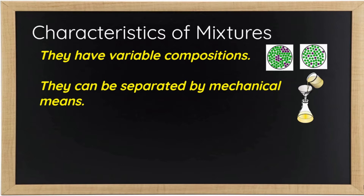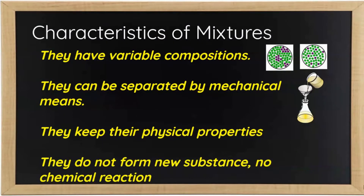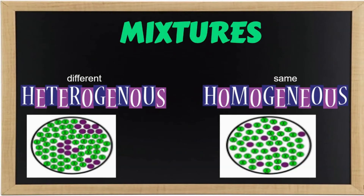Mixtures keep their physical properties — their properties remain the same. They do not form new substances, meaning there is no chemical reaction. The two types of mixtures are: heterogeneous mixture — where hetero means different — and homogeneous mixture — where homo means same.